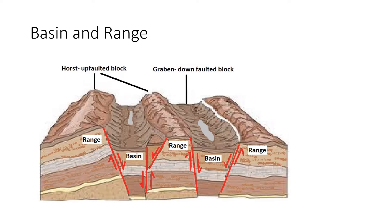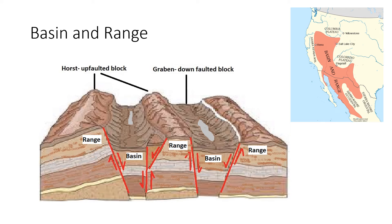Death Valley is the most dramatic of a series of grabens in a province of the United States known as basin and range. The basins are the grabens and the mountain ranges are the horsts. Mountains formed in this way are called fault block mountains.